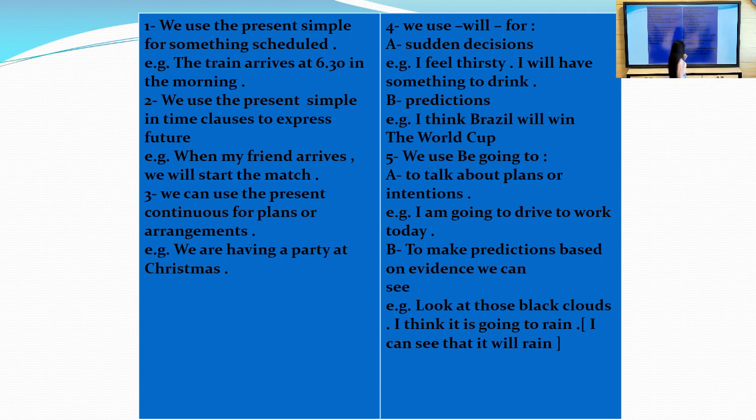B: to make predictions based on evidence. If we have predictions without evidence, I will use will. If I have evidence, if I have predictions with evidence, I will use going to. For example, look at those black clouds. We have evidence. I think it's going to rain. This is the evidence.